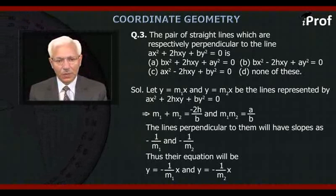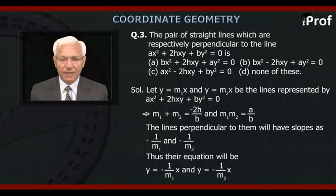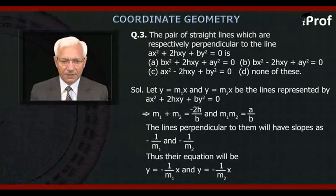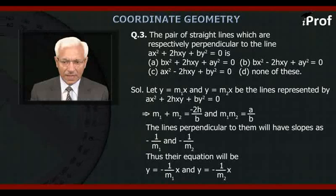Let Y = M1·X and Y = M2·X be the lines represented by AX² + 2HXY + BY² = 0. That implies M1 + M2 = -2H/B and M1·M2 = A/B. The lines perpendicular to them will have slopes -1/M1 and -1/M2.